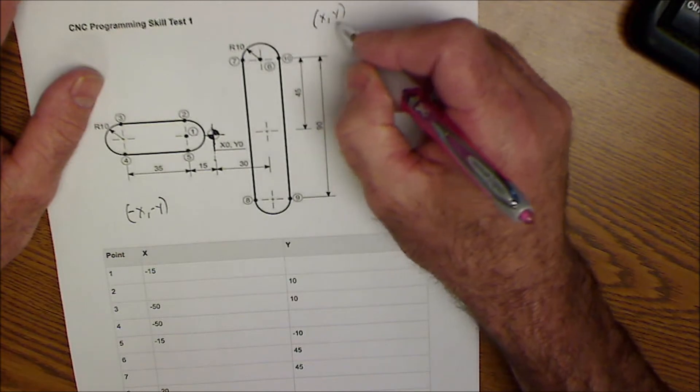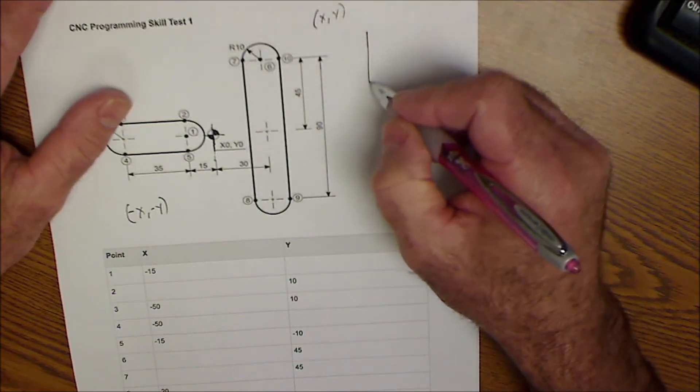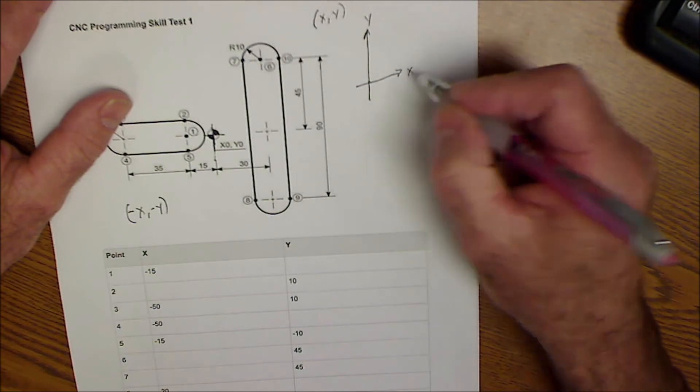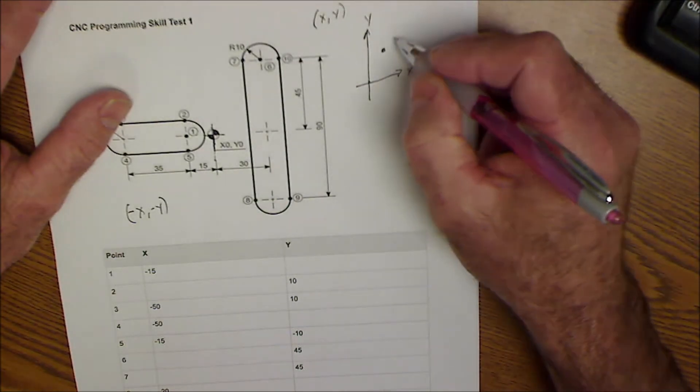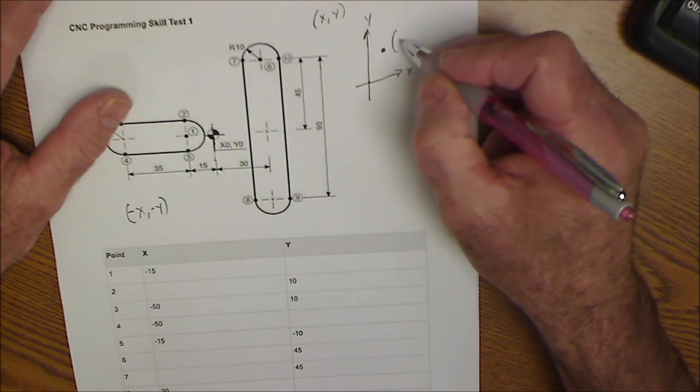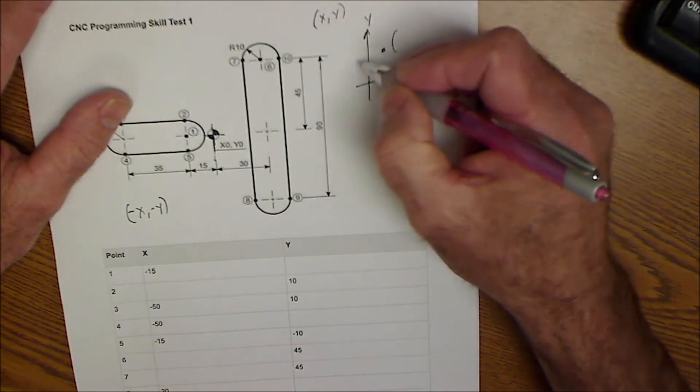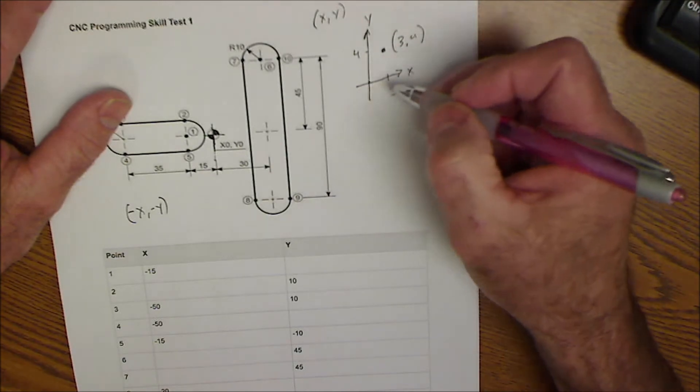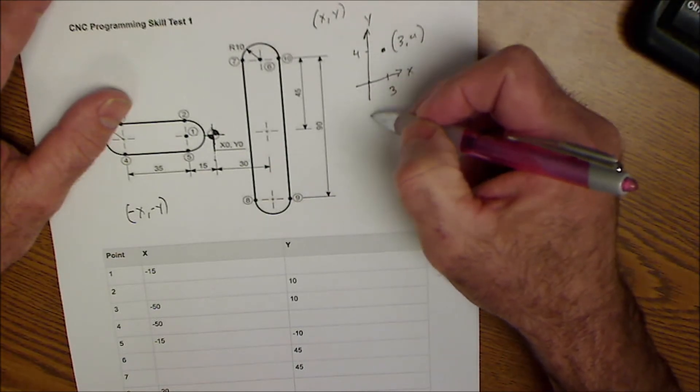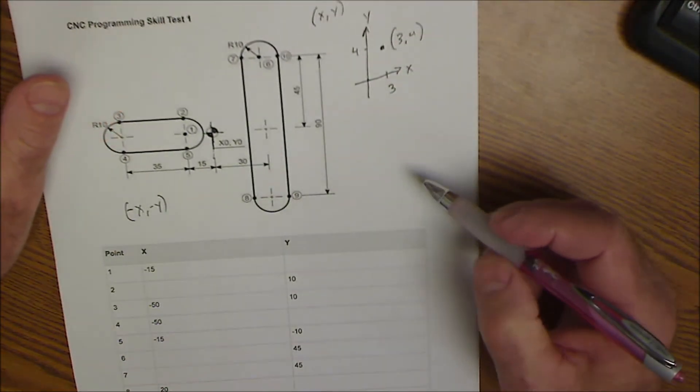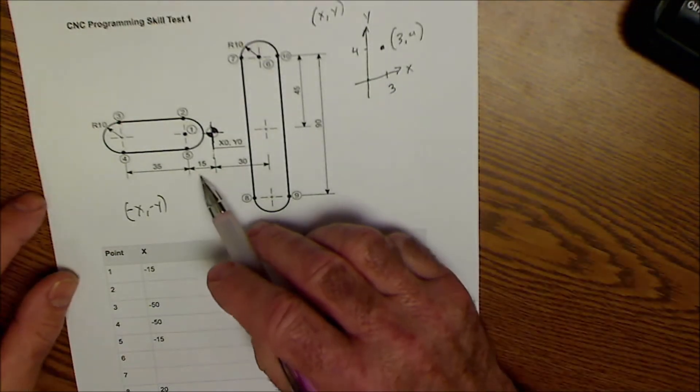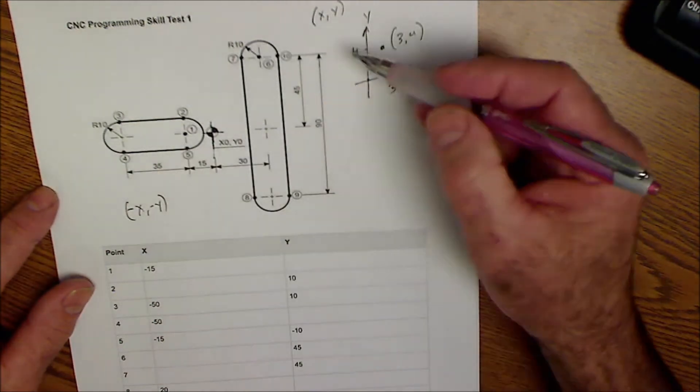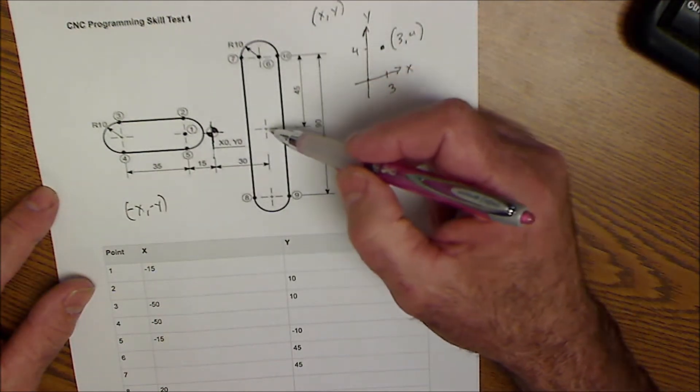Remember, X always comes before Y - it's always over and then up. There's my axes: this is my Y axis, this is my X axis. This is a coordinate on the Cartesian coordinate plane - say over three, up four. A couple other pieces of notation: dimensioning lines, this is a radius of 10. There's a center point right there to note.